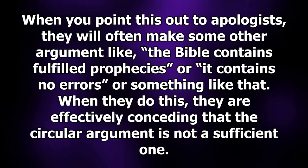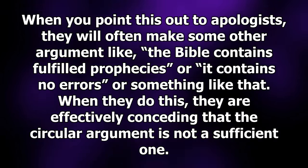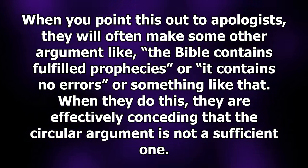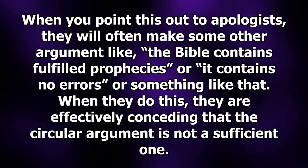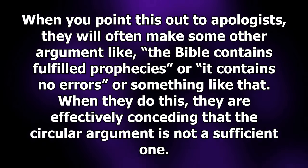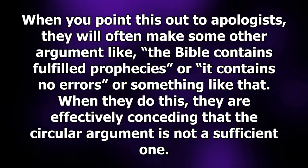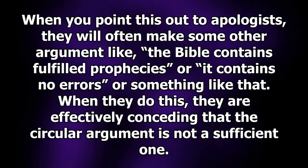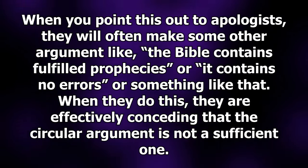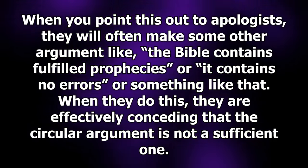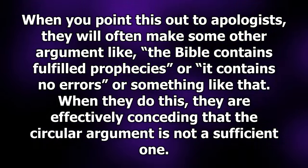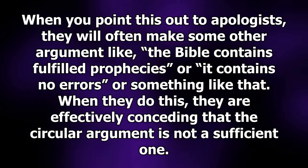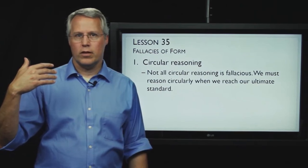When you point this out to apologists, they will often make some other arguments — like the Bible contains fulfilled prophecies, or it contains no errors, or something like that. When they do this, they are effectively conceding that the circular argument is not a sufficient one.